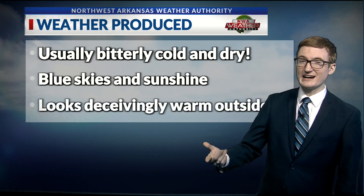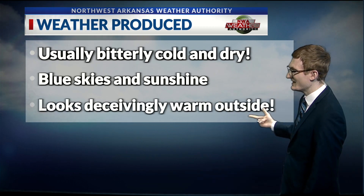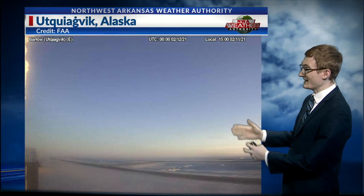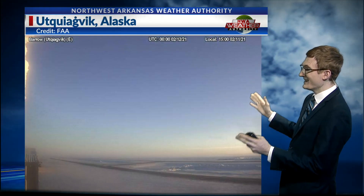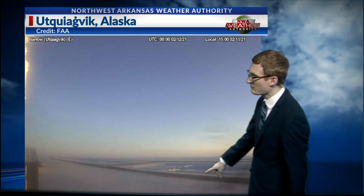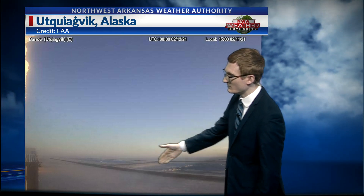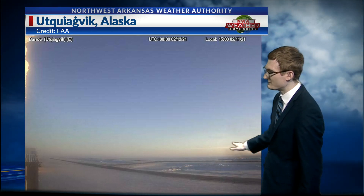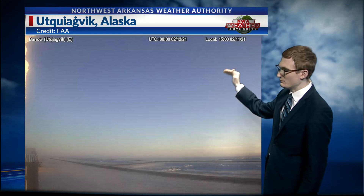Usually we see blue skies and sunshine, and it does look deceivingly warm outside. Case in point — this is Utqiaġvik, Alaska, formerly known as Barrow, Alaska, and you can see the airport here. We do have snow on the ground and freezing fog in the distance, with blue skies.